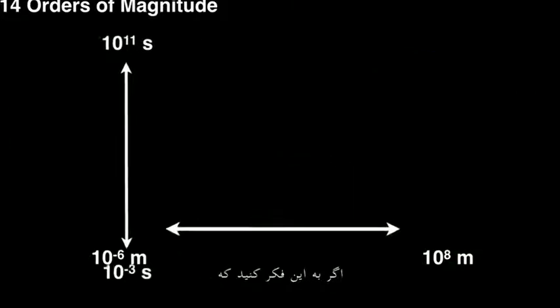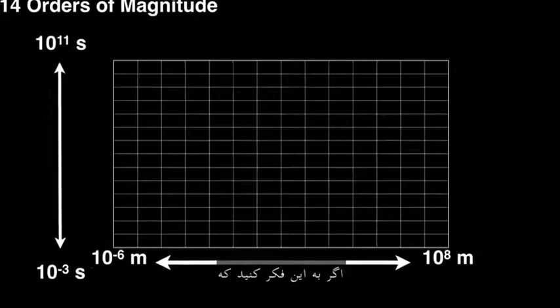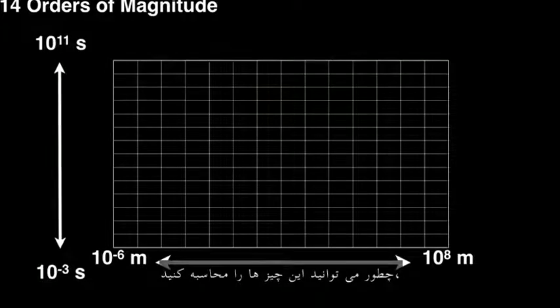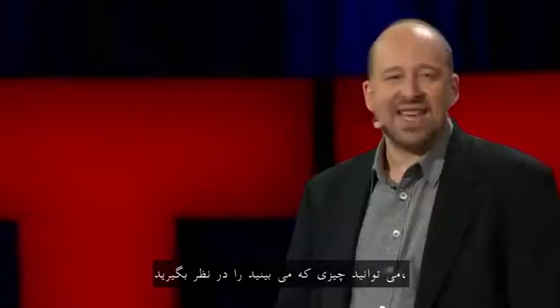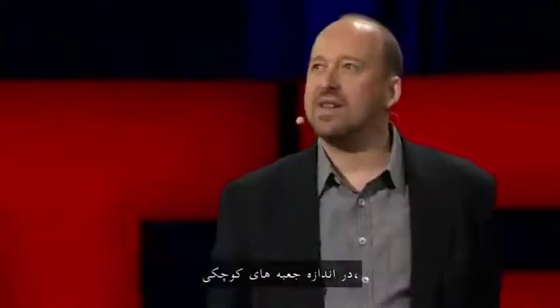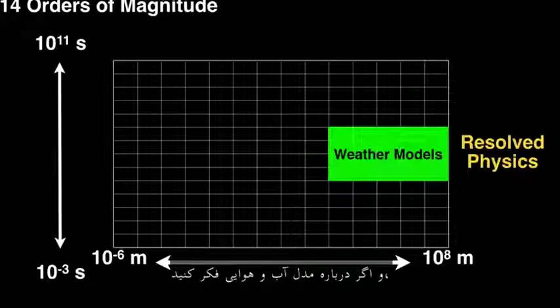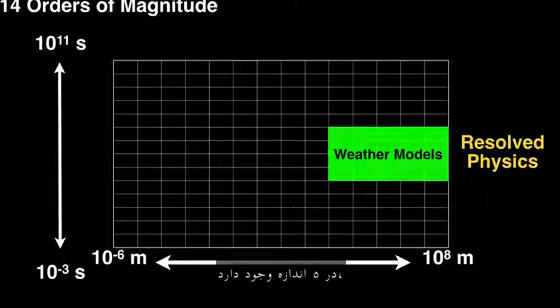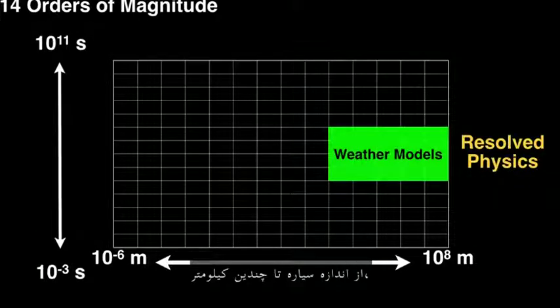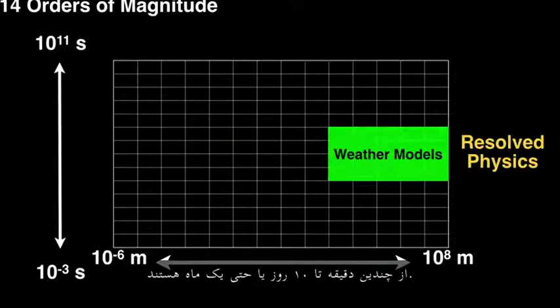What does that mean? Well, if you think about how you can calculate these things, you can take what you can see and chop it up into lots of little boxes. That's the result of grid-box physics. If I think about a weather model, that spans about five orders of magnitude, from the planet to a few kilometers, and the time scale from a few minutes to 10 days, maybe a month.